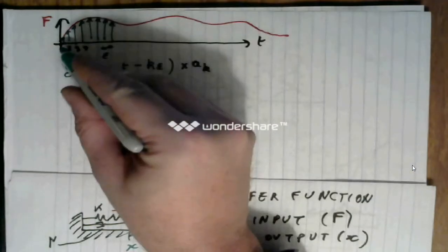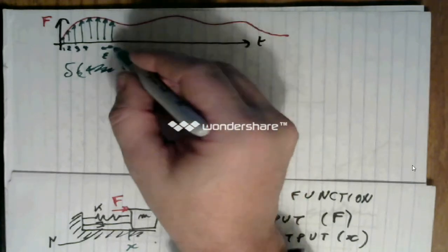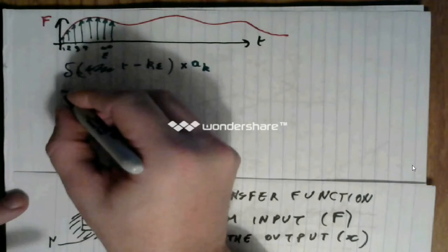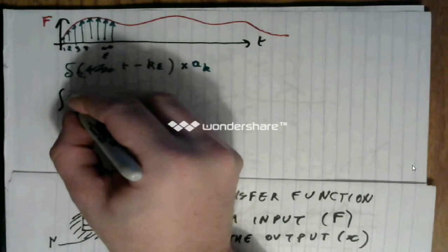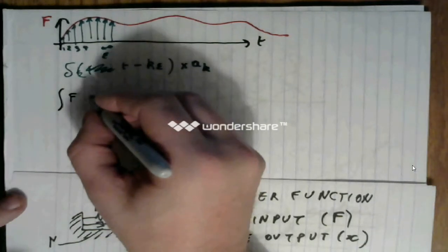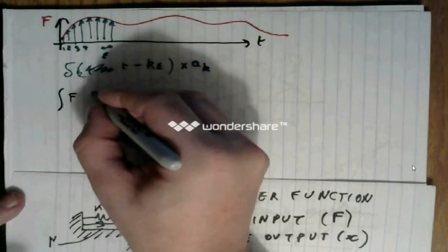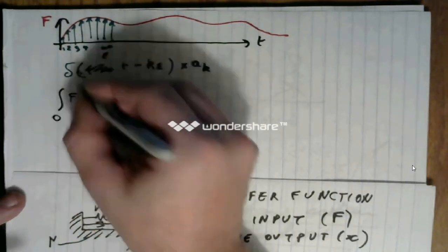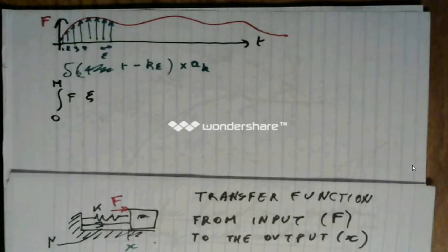Now, the k times epsilon is because this impulse hits with a time delay of k times epsilon. Now, if I were to compute the integral of f times any function, which we will call xi,